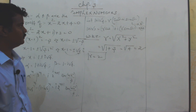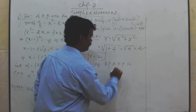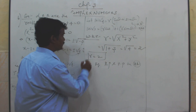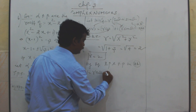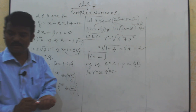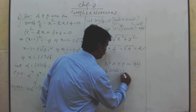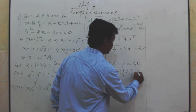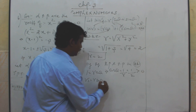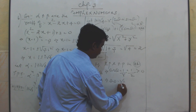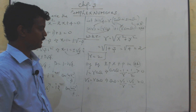Next we find theta. By equating real part and imaginary part in double star, we get: equating the real part, 1 equals r cos theta, so cos theta equals 1 over r, which is 1 over 2, and that is positive. Equating the imaginary part, root 3 equals r sin theta, so sin theta equals root 3 over r, which is root 3 over 2, and that is also positive.